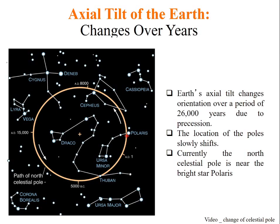The axial tilt of Earth changes over years. Within 26,000 years, due to a motion called precession, the Earth's axial tilt changes.